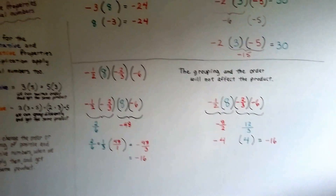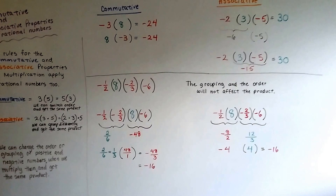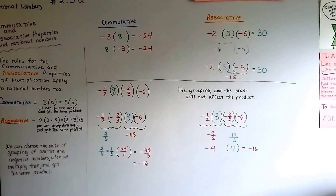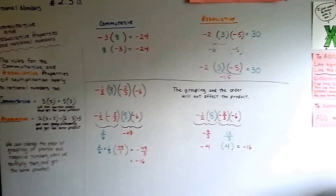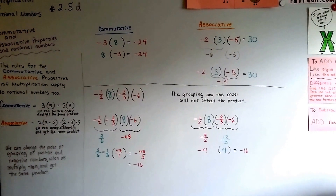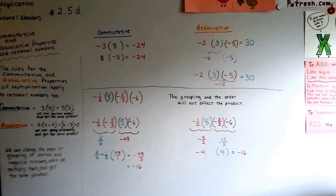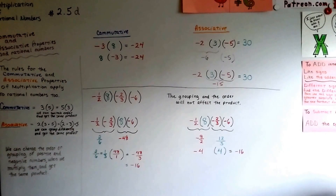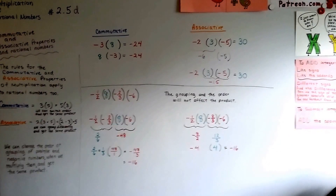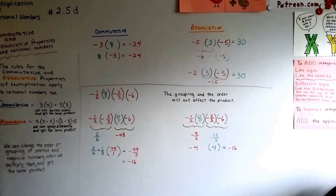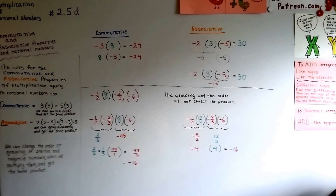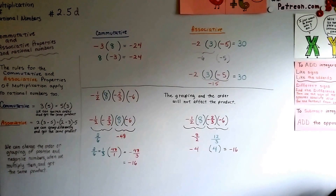So the commutative and associative properties work with rational numbers. In our next video, number 2.5e, we're going to talk about the symbols for sets and subsets of rational numbers.